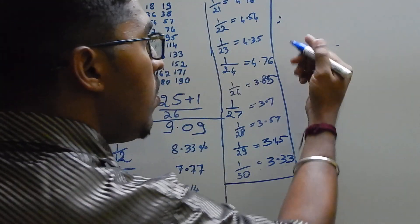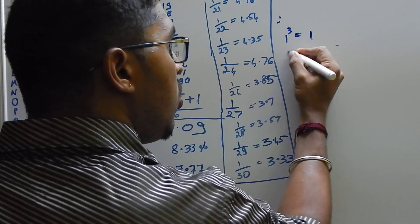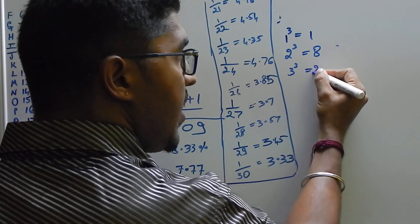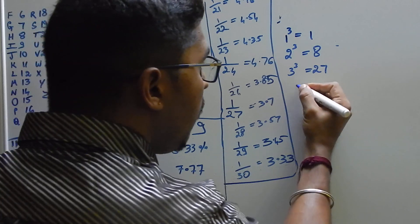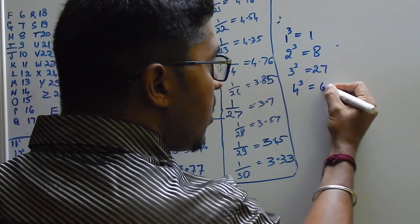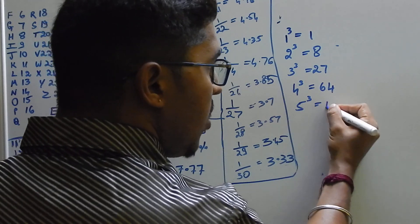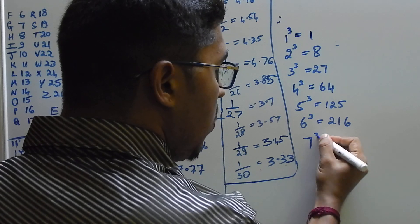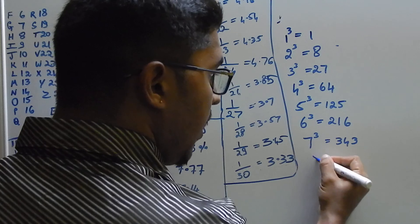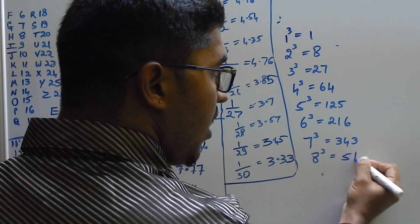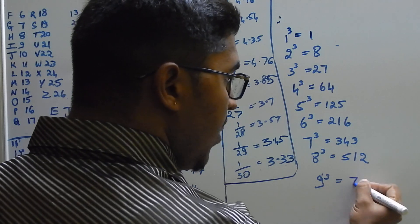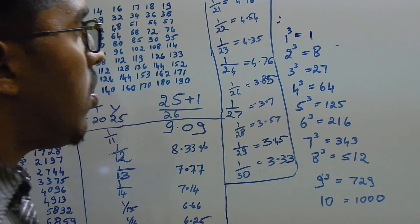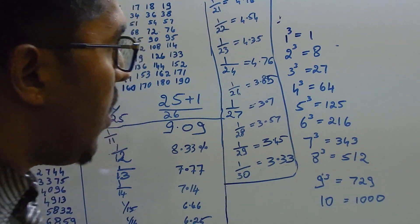Cube of 1 is 1. Cube of 2 is 8. Cube of 3 is 27. Cube of 4 is 64. Cube of 5 is 125. Cube of 6 is 216. Cube of 7 is 343. Cube of 8 is 512. Cube of 9 is 729. Cube of 10 is 1000. So this you should be knowing by heart, as you can see.